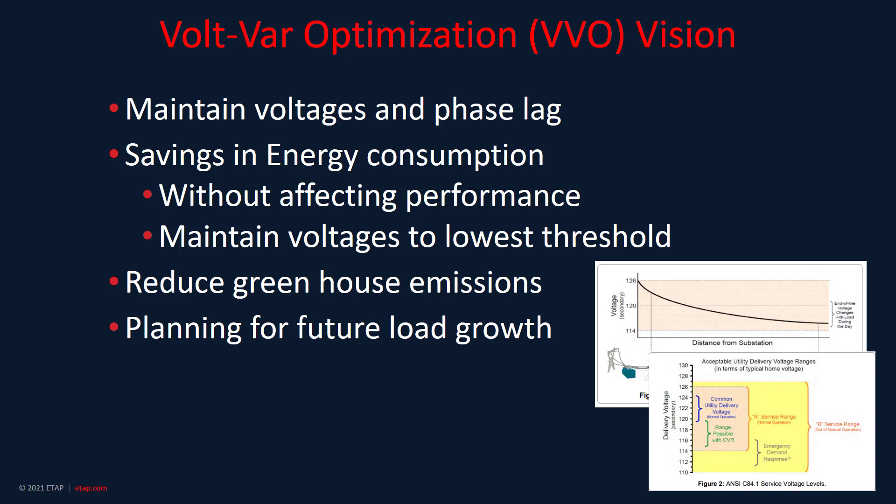Considering objectives and constraints, it is a centralized Volt-Var Optimization for Distribution Management Systems. The main objective of Volt-Var Optimization Control is to make the distribution grid more efficient by decreasing power loss and to reduce utility costs by reducing peak demand, or conservation of voltage reduction.